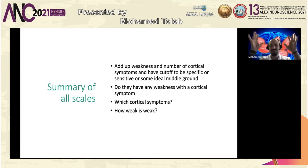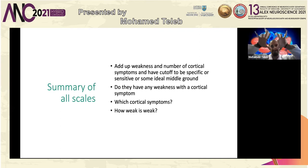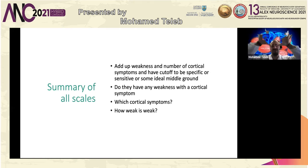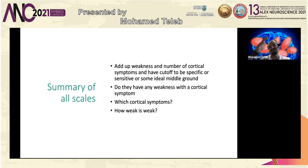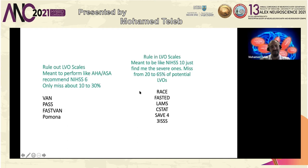I like to give the overall picture first and then zoom into details — it's easier when you're looking from the top. As a summary: all scales add up weakness, a number of cortical symptoms, apply some cut-off, and the question is what's the ideal cut-off for specificity versus sensitivity. Do they have any weakness combined with cortical symptoms, and which cortical symptoms, and how weak are they? That's really what all the scales are.